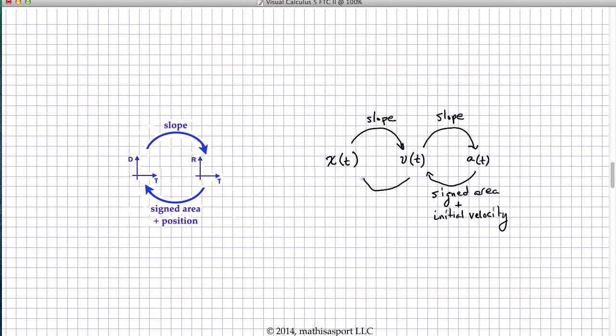And finally, to complete the diagram, to go from velocity to position, I add in the signed area plus the initial position.